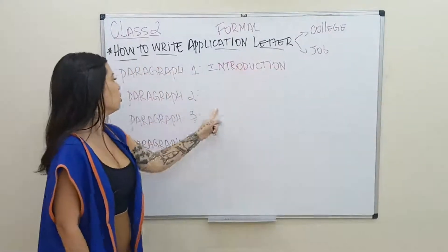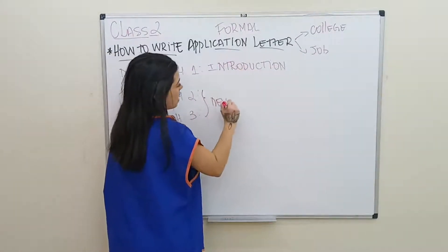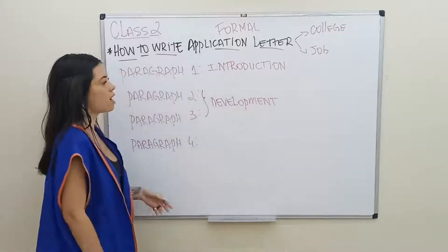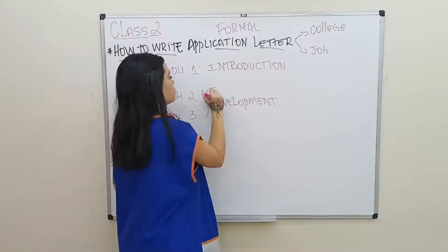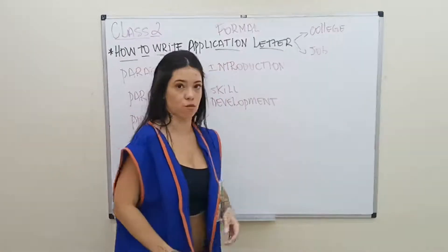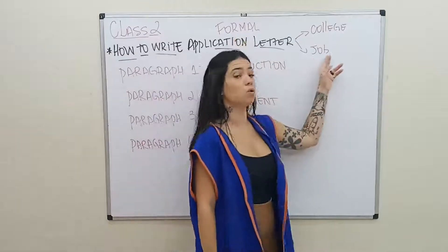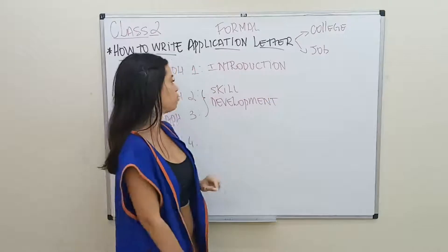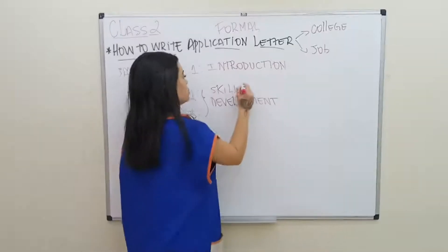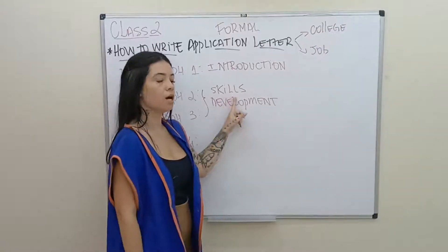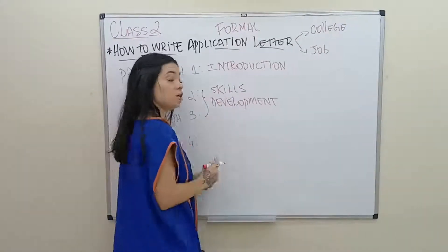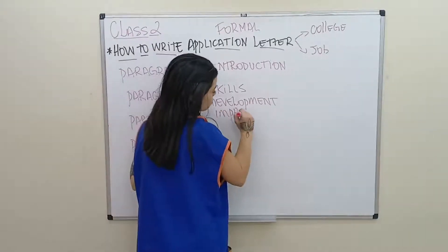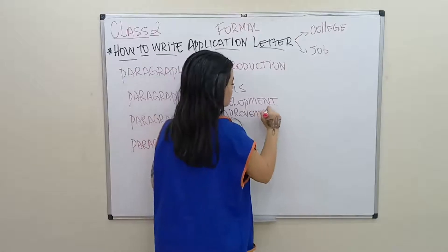Then, when you move to paragraphs two and four, you are going to develop your ideas. So, what is the development about? You are going to tell them your skills — what you are good at. Because if they are going to employ you, or take you in at college or university, they need to know what you are good at. You are going to tell them about your skills and what you can improve in order to get in those places. You are going to talk about improvement because nobody is perfect.